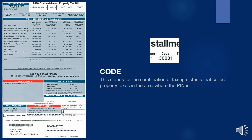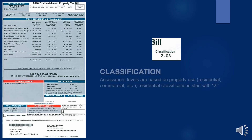The tax code is the combination of taxing districts that collect property taxes in the area where the PIN is located. The classification indicates the type of assessment level based on property use. Residential classifications, for example, start with the number 2.